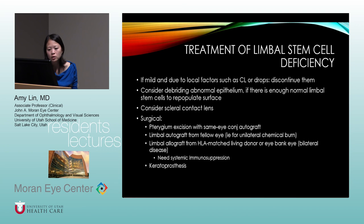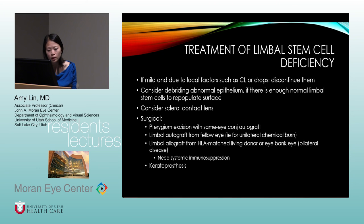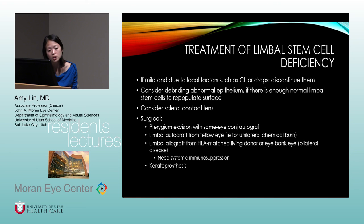Treatment for limbal stem cell deficiency: if mild and due to local factors like contact lenses or drops, discontinue them. Consider debriding abnormal epithelium if enough normal stem cells remain to repopulate the surface. A scleral contact lens doesn't touch the cornea or limbus. Surgically, pterygium excision with conjunctival autograft is an option. For unilateral chemical or thermal burns, a limbal autograft from the fellow eye can be performed. For bilateral disease, a limbal allograft from an HLA-matched living donor or eye bank eye is possible, requiring systemic immunosuppression, or a keratoprosthesis (artificial cornea).